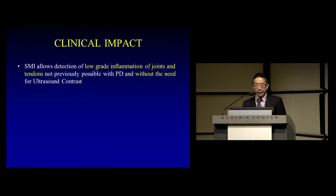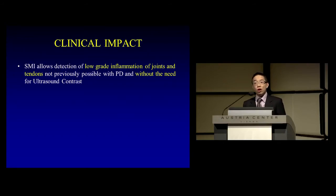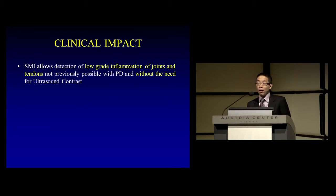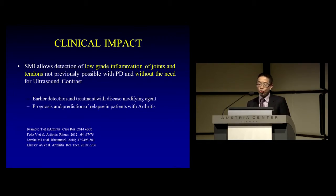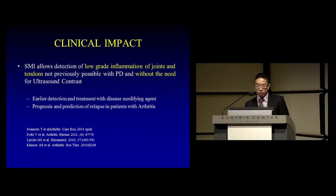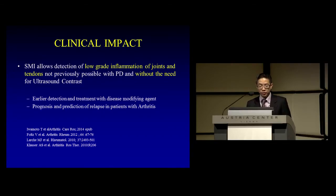This has a huge clinical impact because we are now for the first time able to detect low-grade inflammation of joints in patients with known arthritis who complain of tenderness. Previously, if we detected nothing on Power Doppler, we would say it was inactive — but now we are showing some low-grade activity detectable only by SMI without the need for ultrasound contrast. This has clinical implications for early detection and treatment of disease, as well as influencing prognosis and prediction of relapse. Many papers in rheumatology journals suggest that Doppler ultrasound is much better than MRI as an indicator for detecting activity in small joints.